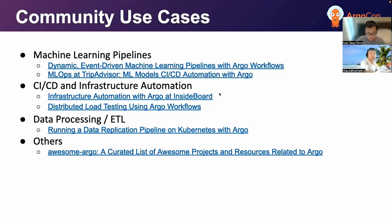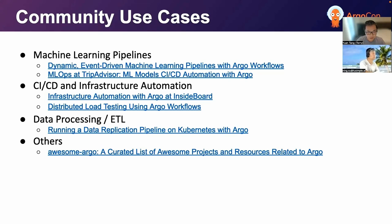Besides the specific use cases at 2Simple that Ning mentioned previously, machine learning pipelines, CI/CD and infrastructure automation, as well as data processing are among the popular use cases we found in the community. For example, TripAdvisor uses Argo Workflows for CI/CD automation of their machine learning models. Intuit uses it for distributed load testing. You can find more use cases and past presentations at various conferences and meetups from the community in the Awesome Argo repository linked at the bottom.